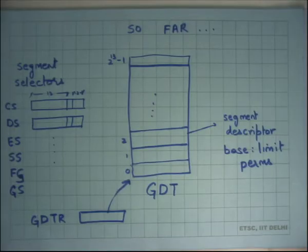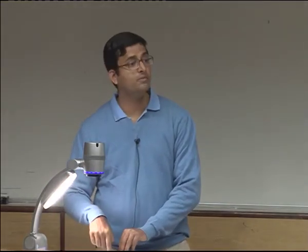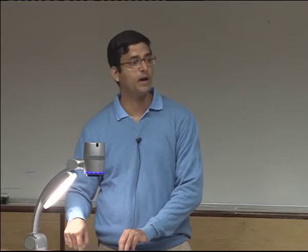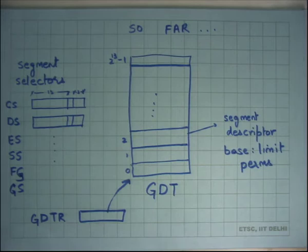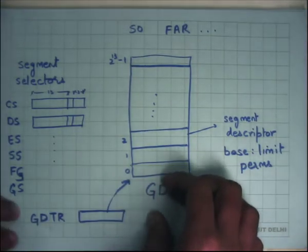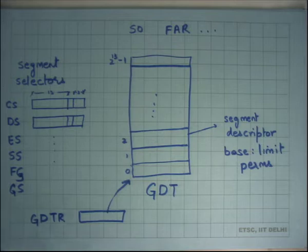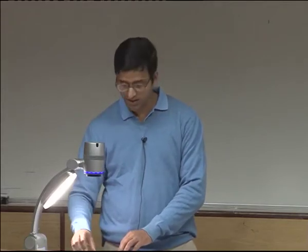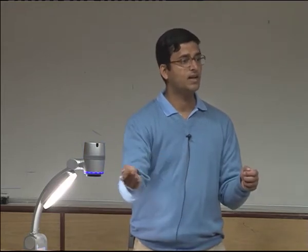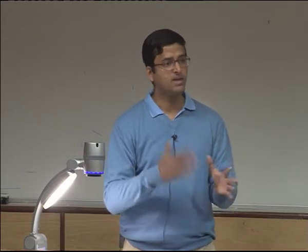Question: Is the value of GDTR read at every memory access instruction? In other words, does every memory access cause another memory access to the GDT? Logically yes, but actually no, because these entries get cached inside the chip. There are semantics on when caching takes place and when it gets invalidated. The descriptors for all six segments present on the CPU just get cached inside the CPU, so you don't have to go over the bus every time to access the GDT descriptor.